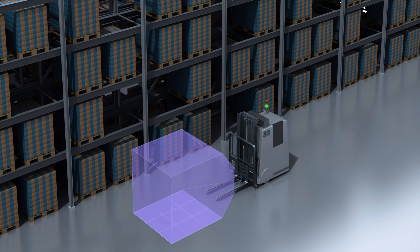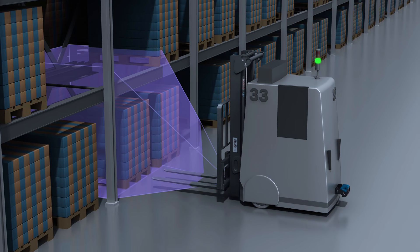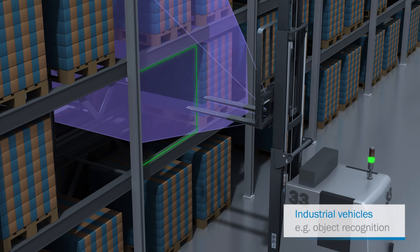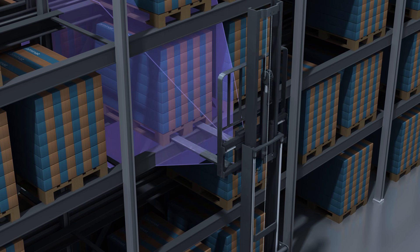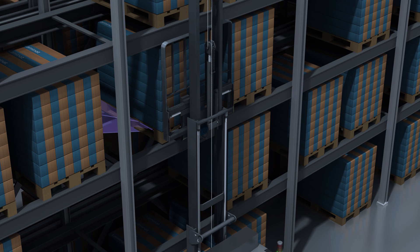Furthermore, Visionary T can be used for object recognition and classification. For forklifts, this includes the robust and fast detection of pallet pockets and empty bay detection.